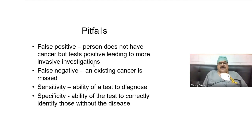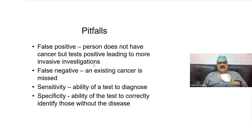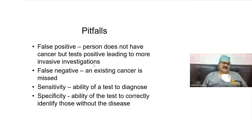Sensitivity is the ability to correctly identify those with the disease, and specificity is the ability to correctly identify those without the disease. If you can identify 100% of those who have the disease, sensitivity is 100%. If you identify all those who do not have the disease, specificity is 100%. No test has 100% sensitivity and 100% specificity, so what we have is a mixture — say 90% sensitivity and 80% specificity.